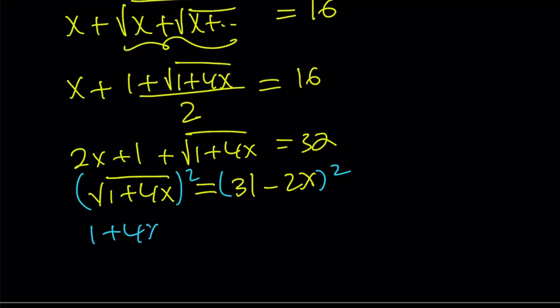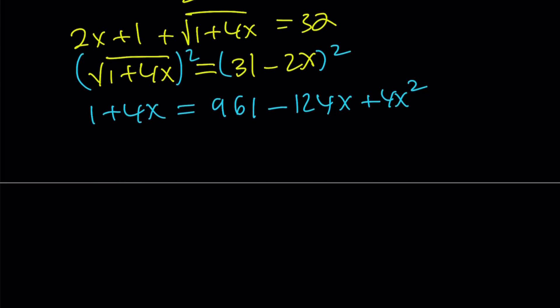When we square both sides, we get 1 plus 4x equals 961, which is 31 squared, minus 2 times 31 times 2, that should be 124x, plus 4x squared. I know some of you are thinking, why is he complicating these things? I just want to show you different alternatives. You may or may not like it, but I wanted to introduce these methods to you.